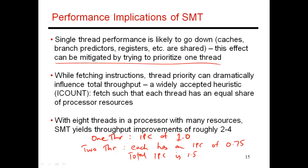In that case, the IPCs might be 0.97 and 0.52, which gives you a total throughput of 1.49 IPC. I'm making up numbers at this point, but this gives you an idea of how at least one thread can come pretty close to a standalone IPC. Simultaneous multithreading will still improve throughput because there are many cycles where the high-priority thread is not using up all the resources, and the other thread can use those idle slots to get work done.